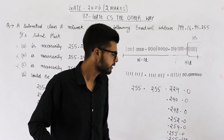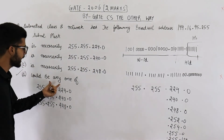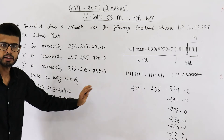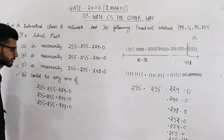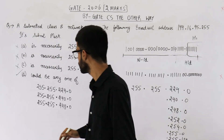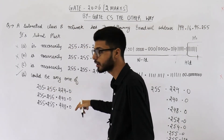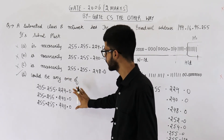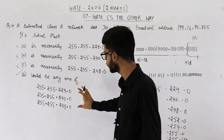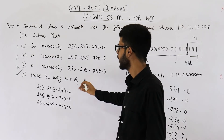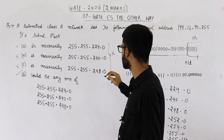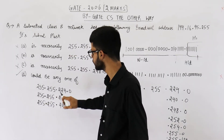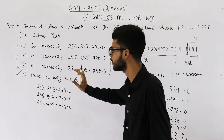So the first three options are incorrect, which means option D is the answer. Option D says the subnet mask could be any one of these three listed values. Because the first three options are incorrect and they haven't mentioned all the possibilities — only a few — option D is the answer. Thank you very much for watching this video. Have a good day.